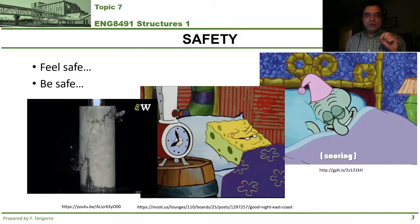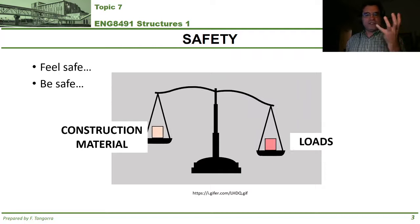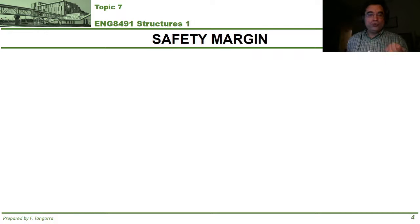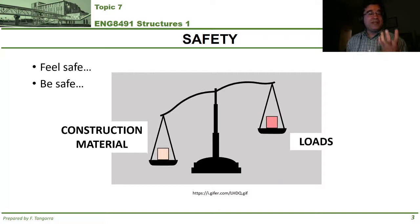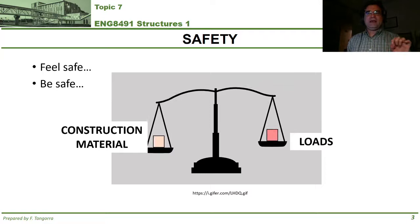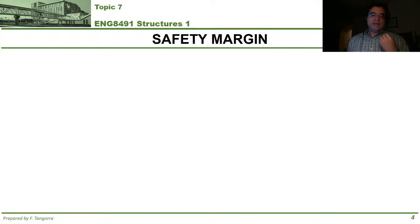However, in order for a structure to support the loads on it, we have to recognize that ensuring a safe structure is actually a balance — a balance between the properties of the construction materials used to make that structure and the loads that structure has to resist. A structure is safe if its strength is greater than the strength required to carry those loads. As long as the strength of the structure is greater than the loads it has to support, we're okay, and that's where safety margins come into play.